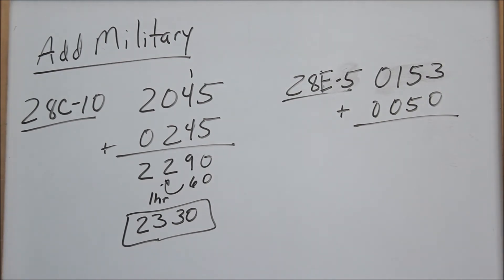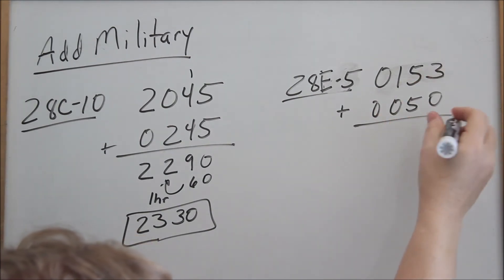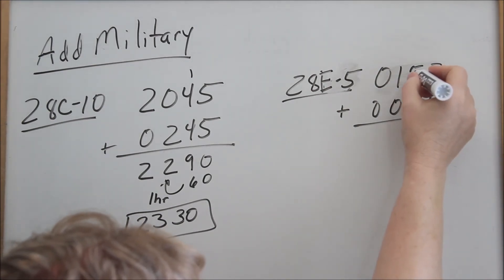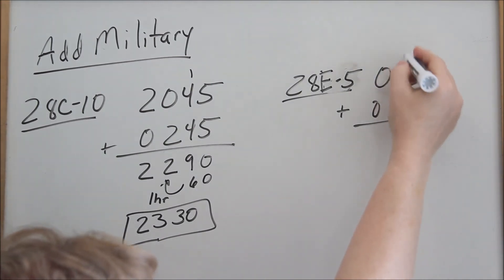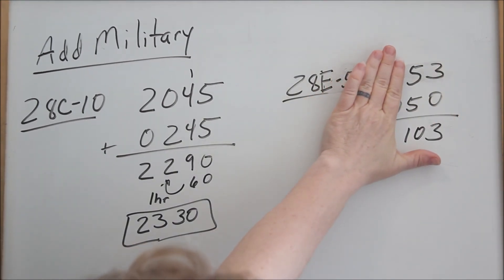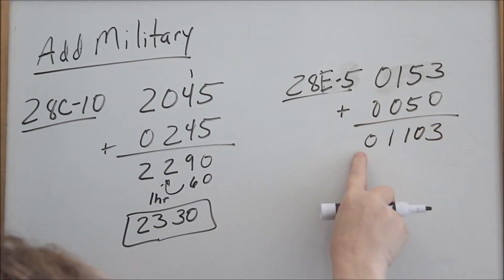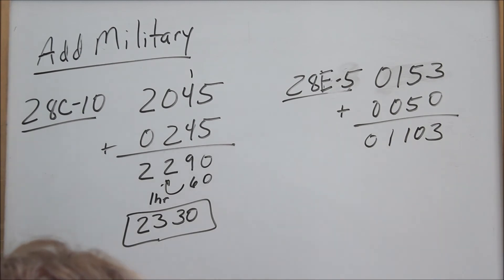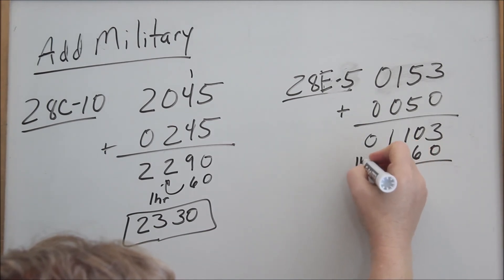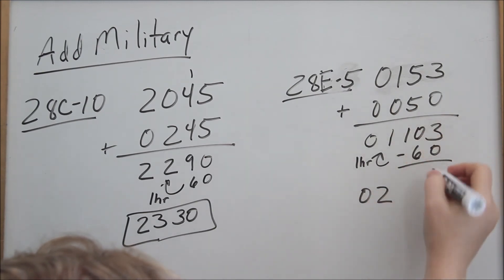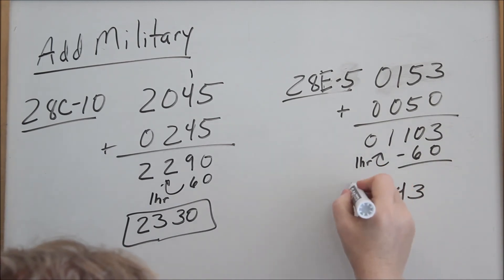Looking at 0153 plus 0050. Add minutes and hours separately. Minutes: 53 plus 50 — 3 plus 0 is 3, 5 plus 5 is 10, so 103 minutes. Hours: 01 plus 00 is 01. So we have 1 hour and 103 minutes. We can only have 60 minutes, so subtract 60 minutes and add 1 hour: hours become 02. 103 minus 60: 3 minus 0 is 3, 10 minus 6 is 4, giving 43 minutes. Answer: 0243.